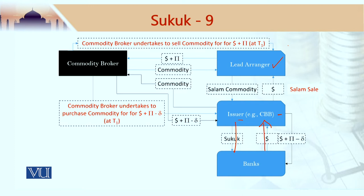Pursuant to this Salam sale, the Central Bank of Bahrain buys a commodity from the lead arranger and pays the amount of money now. So pursuant to this Salam contract, the lead arranger would receive money now and deliver the commodity later. This Salam commodity would be delivered later — normally it is a 30-day transaction.